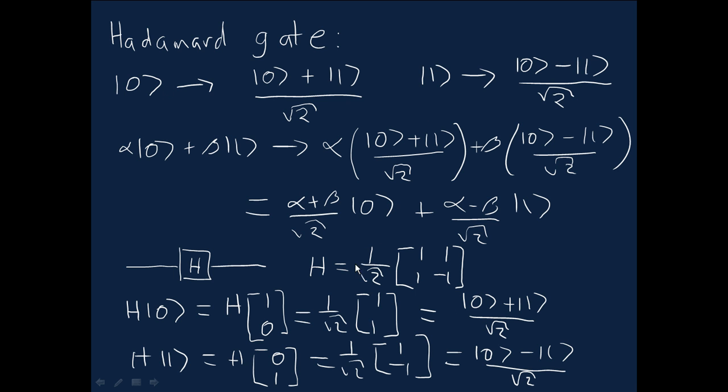So that tells us that this H matrix does indeed give the right action on the zero and one states. And because matrices act linearly on vectors, they must therefore give the right action on any state, a general state like this one here as well. And if you wish, you can go through and actually explicitly check that.